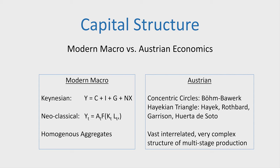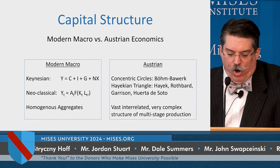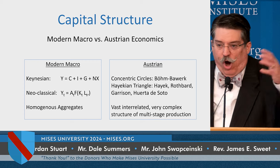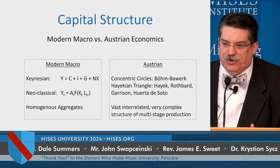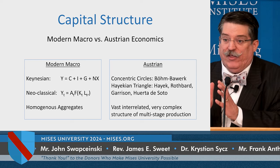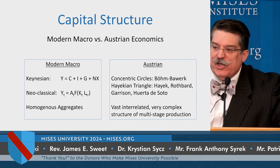If we look at modern macroeconomics versus Austrian economics: the Keynesian variety conceives of the economy as an accounting identity where Y equals national income, equal to national output, and Y equals C plus I plus G plus NX — total consumer spending, plus business investment spending, plus government spending, plus spending on net exports. All of the capital structure in Keynesian economics is subsumed in this homogeneous I — the big I for investment. That's really all that Keynesians have to say about the nature of capital.